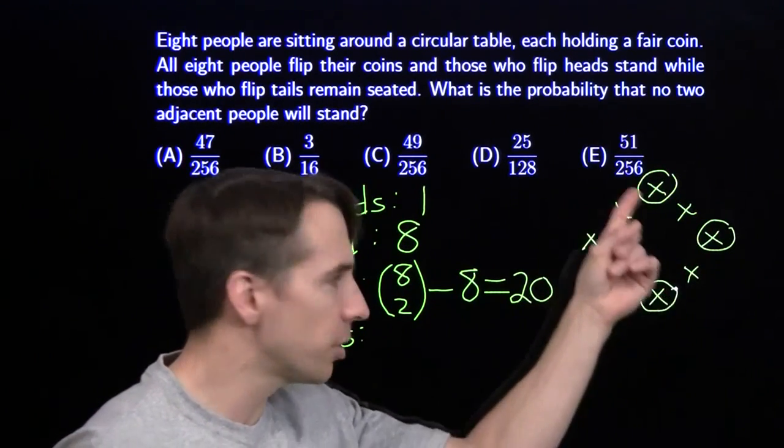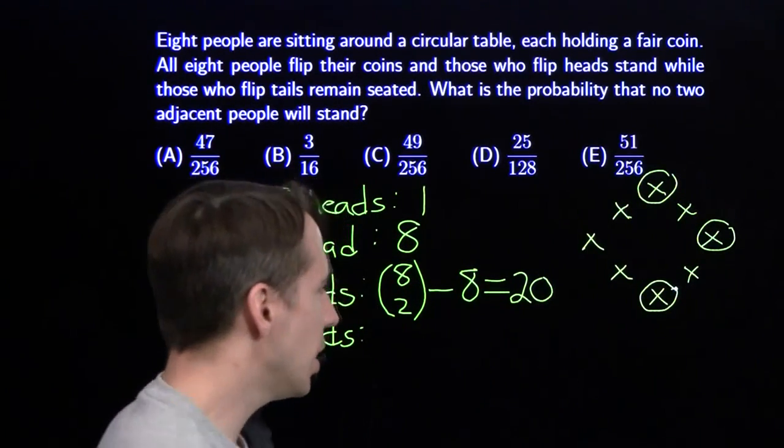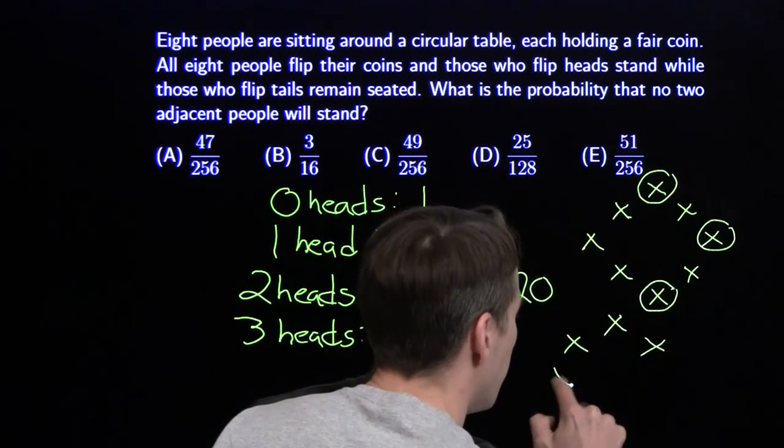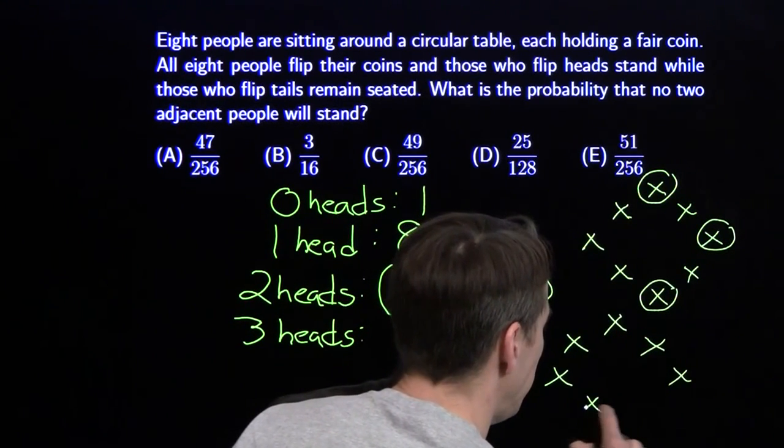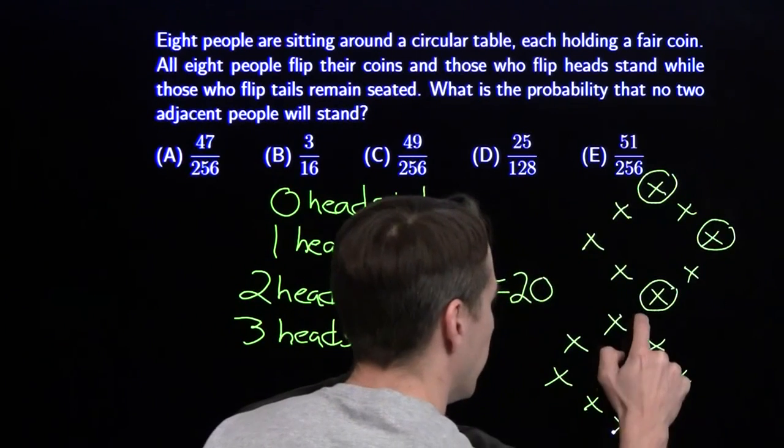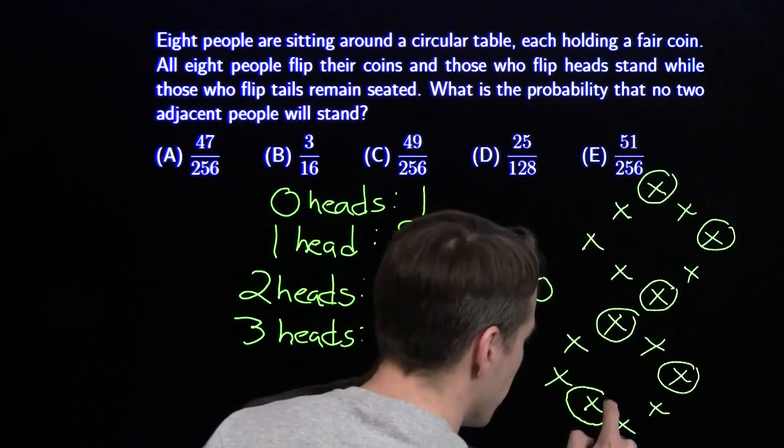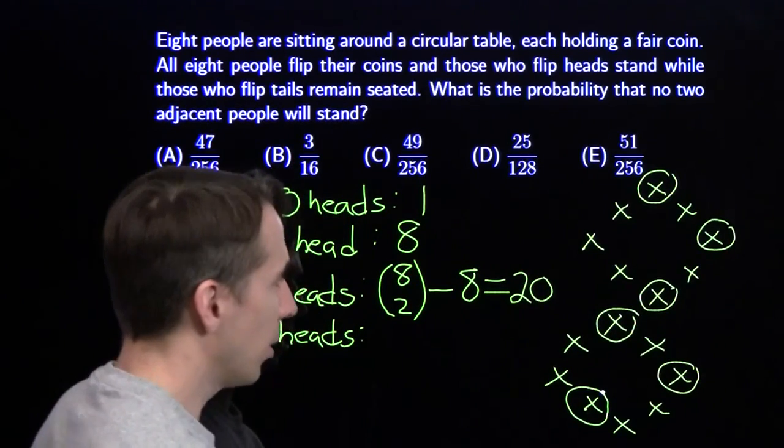But this isn't the only way we can end up with three heads, no two adjacent. Let's take this person, this person, and now this person over here. Now look at the gaps here.